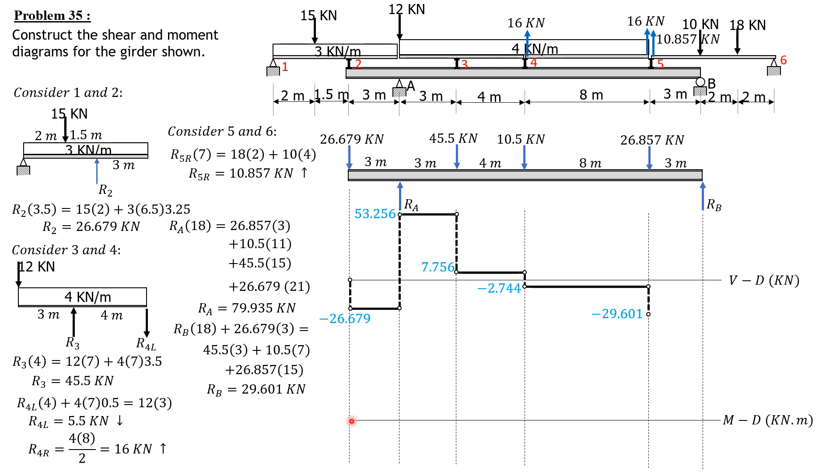For the moment diagram, before that, let's compute the area. This is negative 26.679 times 3, so that's negative 80.037. The area of this diagram is 53.256 times 3, which is 159.768. 7.756 times 4 is 31.024. Negative 2.744 times 8 is negative 21.952. The area of this rectangle is negative 29.601 times 3, which is negative 88.803.